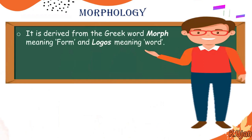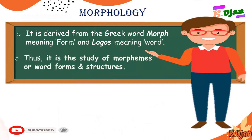Morphology is derived from the Greek word 'morph' meaning form, and 'logos' meaning word. So morphology is actually the study of forms of a word in simple terms. It is the study of morphemes or word forms and structures. Later in this lecture, we are going to explain what morphemes are as well.